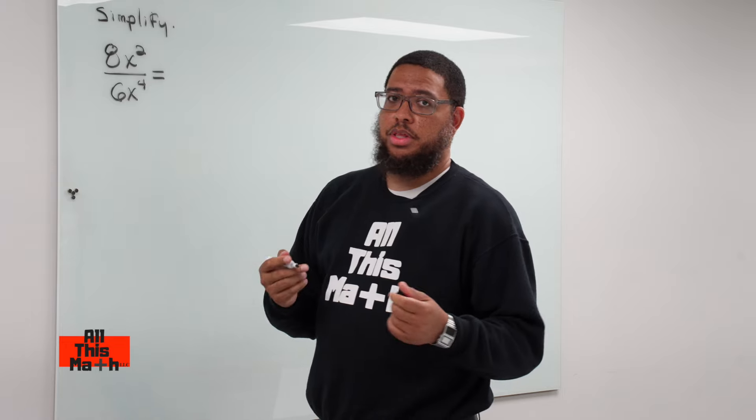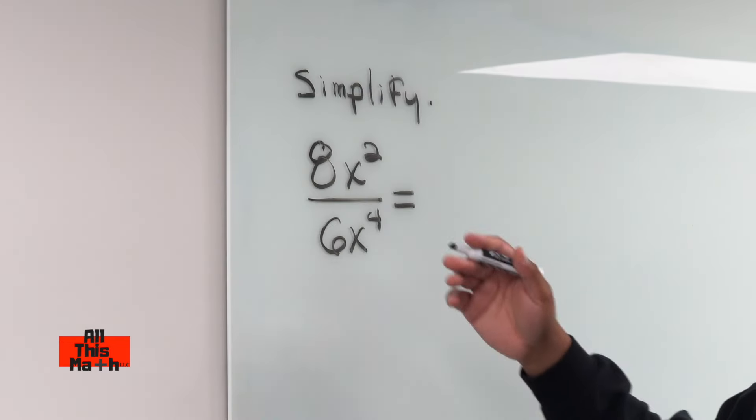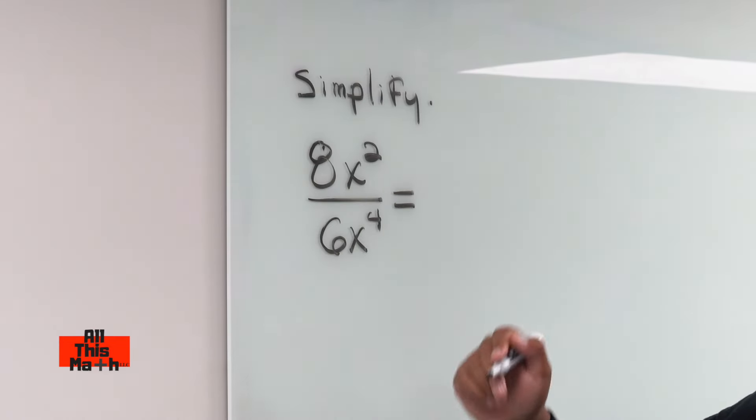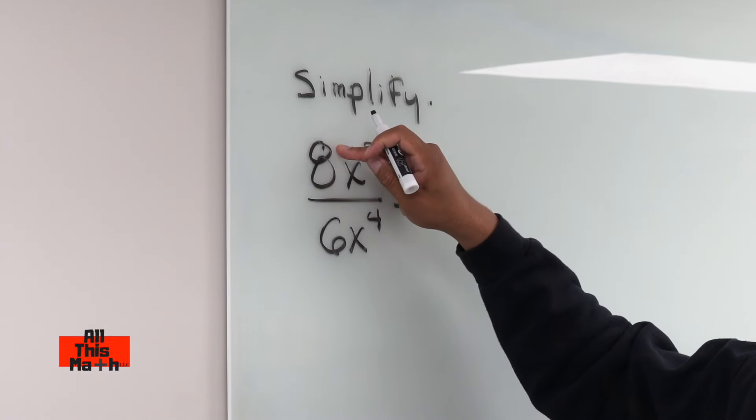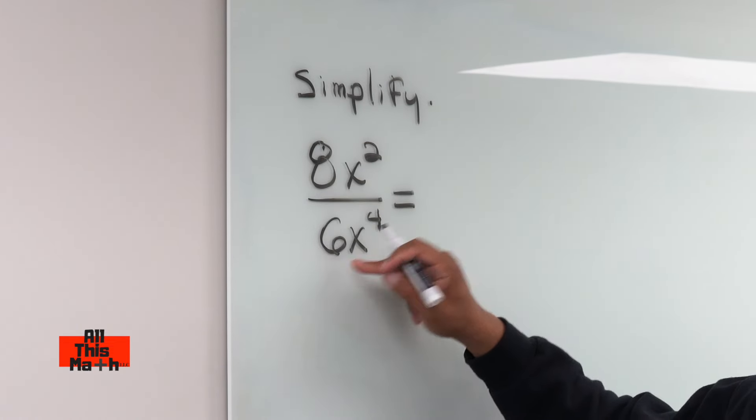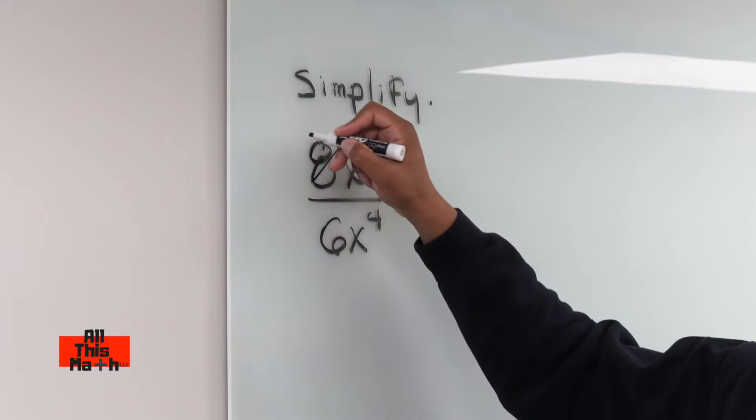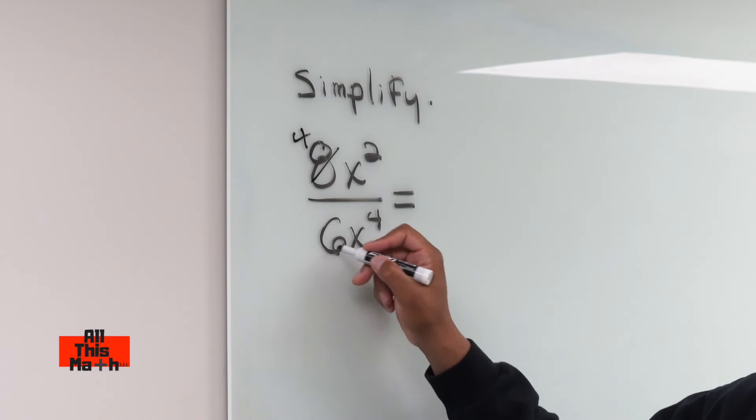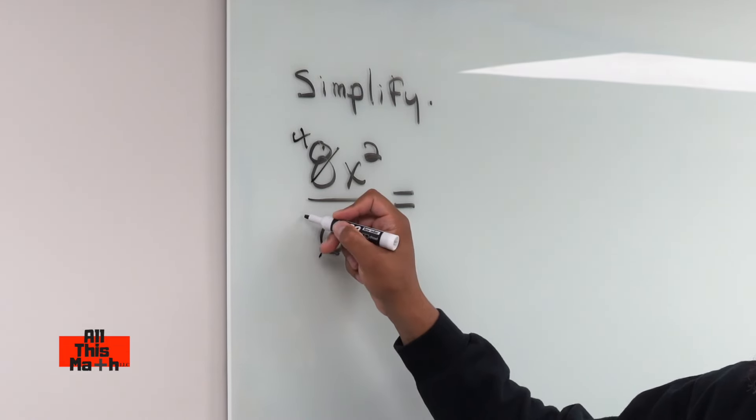Now how would we reduce it? We think about what the common factor is between 8 and 6. The greatest common factor between 8 and 6 is 2. So basically we're going to divide 8 by 2, we're going to divide 6 by 2. So 8 divided by 2 is 4, so the 8 turns into a 4. 6 divided by 2 is 3, so the 6 turns into a 3.